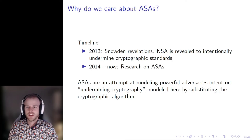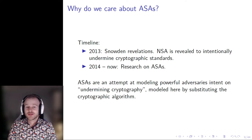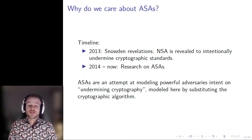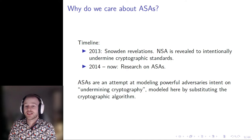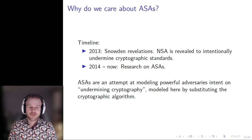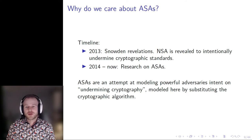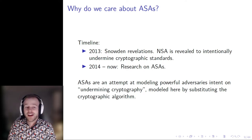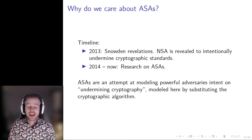Now I'll talk a little about motivation. In 2013, Snowden revealed a vast amount of classified NSA material, some of which disclosed that the NSA works to deliberately undermine cryptographic standards when it is of benefit to the US. In 2014, the first research on ASAs was published. The first works in this area were heavily motivated by the threat of mass surveillance by powerful adversaries, and ASAs were their way to model the undermining of cryptography toward that goal.